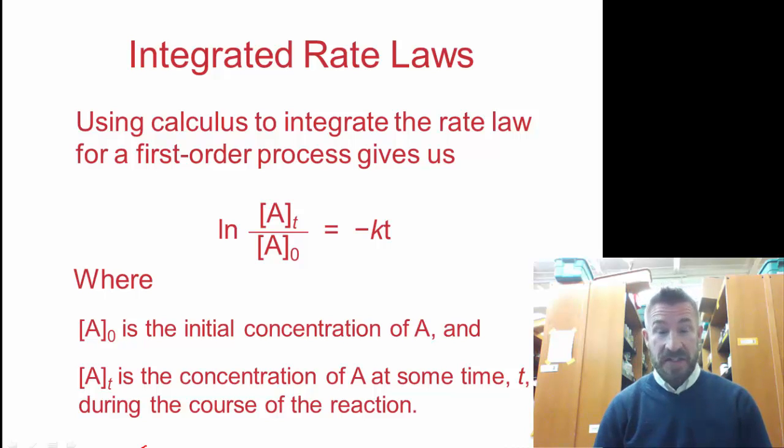There are three ways to write rate laws. The first way we talked about is using experimental data. Use the concentration and how long it takes for the concentration to react. The second way is to graph. What you do is graph the concentrations versus time and compare the graphs.